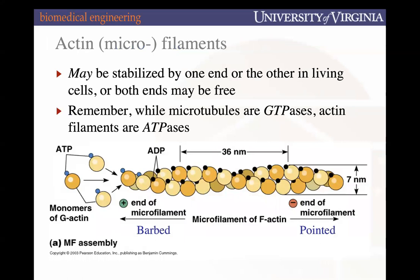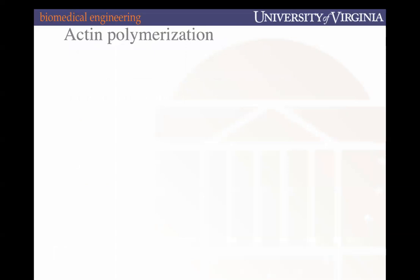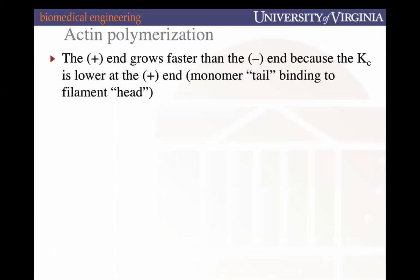The next class of cytoskeleton proteins are actin filaments, also historically called microfilaments. Unlike tubulin, actin filaments have both the positive end and negative end free — either can grow. While microtubules were a GTPase, actin is an ATPase, meaning it has an affinity for ATP. While growth can occur at both ends, typically the positive end is where most growth occurs, by nature of the structure — the critical concentration is lower at the positive end.